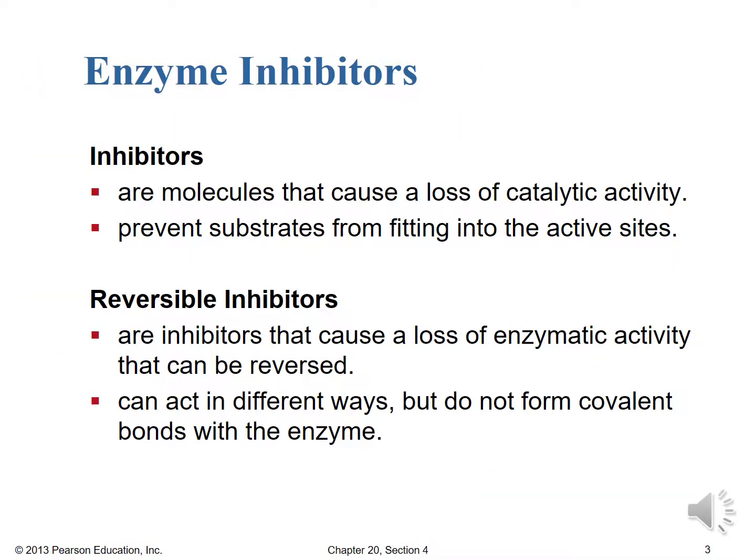Enzyme inhibitors are molecules that cause a loss of catalytic activity by preventing substrates from fitting into the active sites. Inhibitors can be positive or negative in terms of what they do in the human body. Reversible inhibitors cause a loss of enzymatic activity that can be reversed. They do not form covalent bonds with the enzymes, because that's more difficult to reverse, but they can prevent substrates from fitting into the active sites by doing something else to the enzyme.